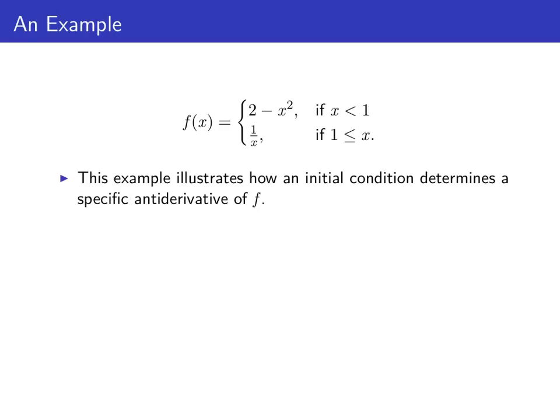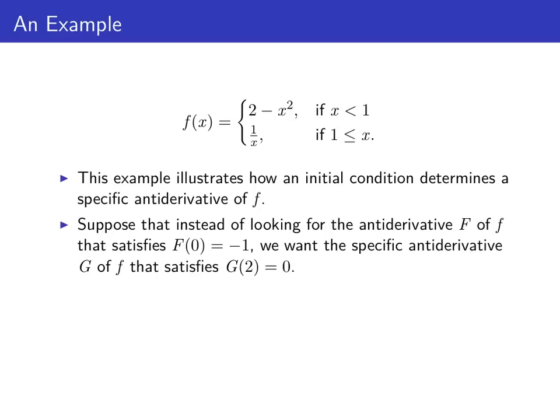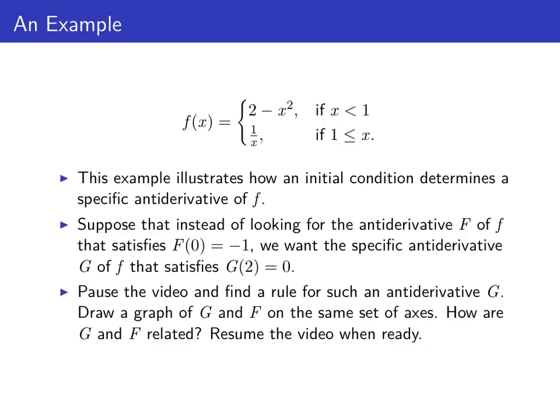This example illustrates how an initial condition determines a specific antiderivative of little f. Now suppose we wanted to find a different antiderivative — maybe one called big G that satisfies the condition G of 2 equals 0. Find a rule for big G such that G of 2 is 0, then draw the graphs of G and big F on the same axes and see if you can figure out how they're related.